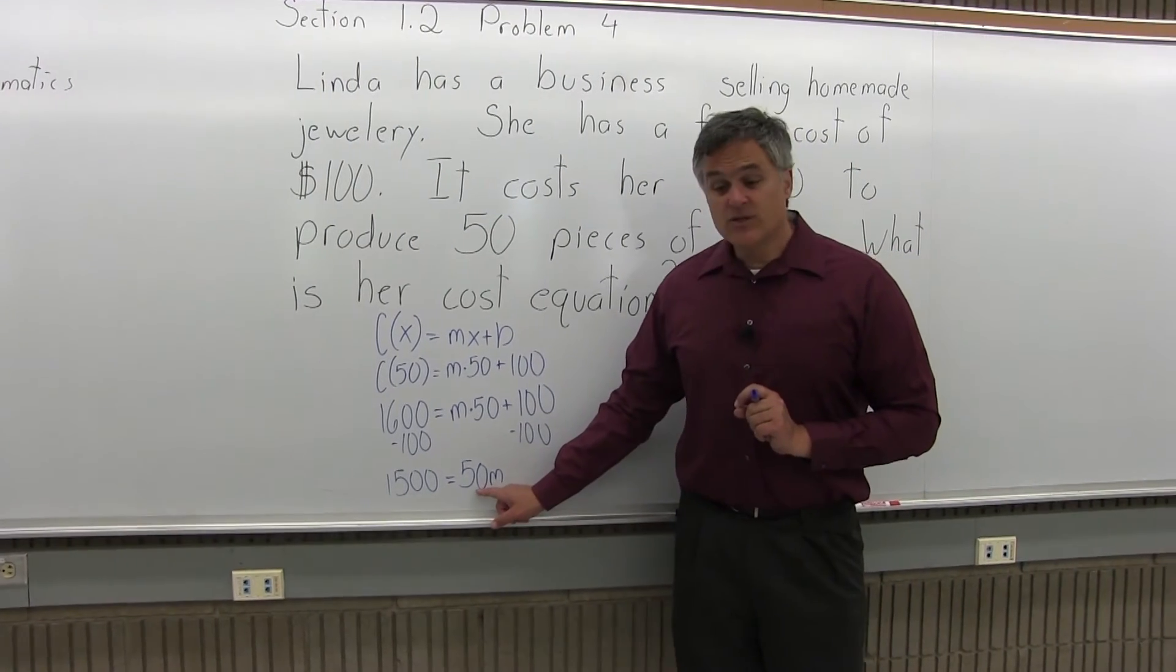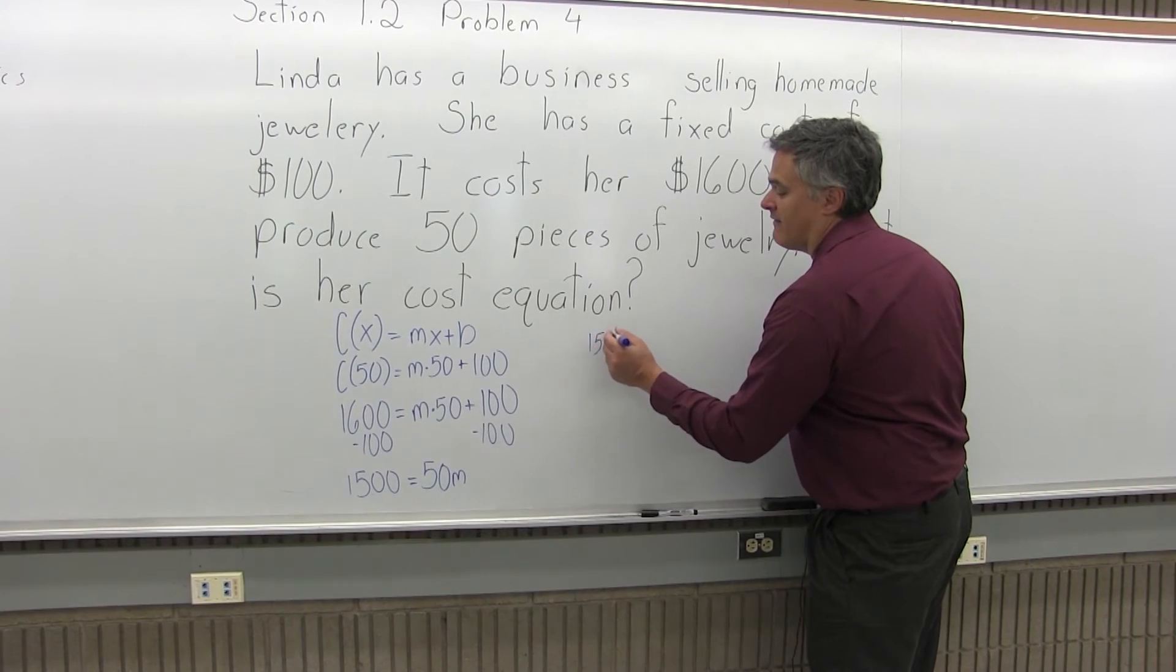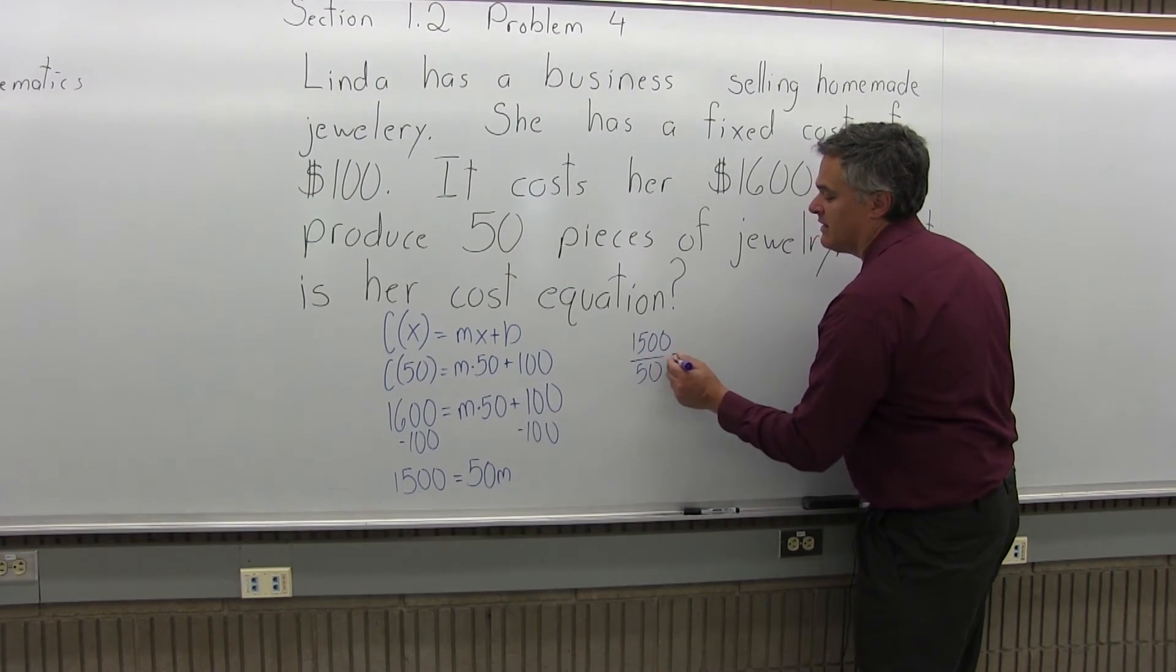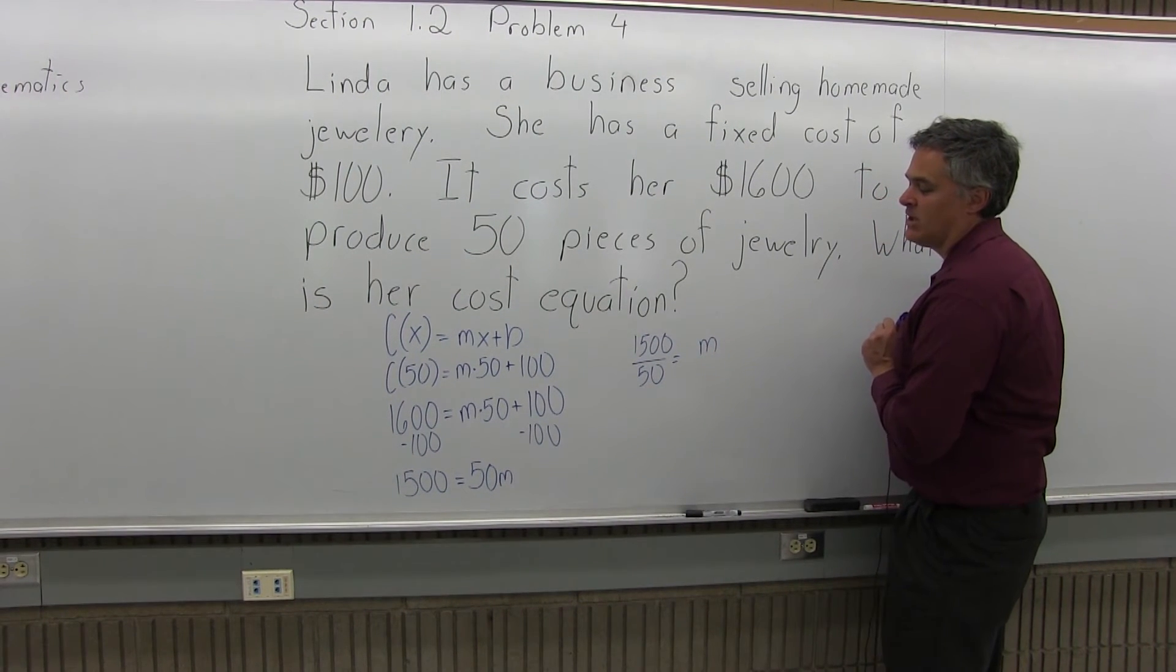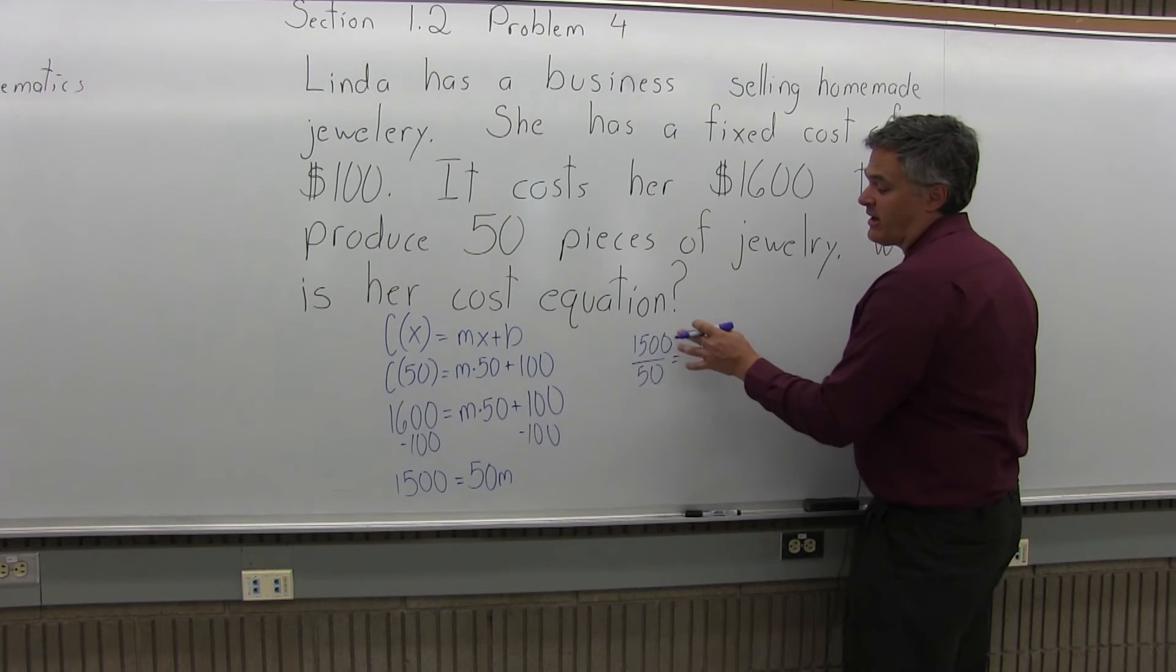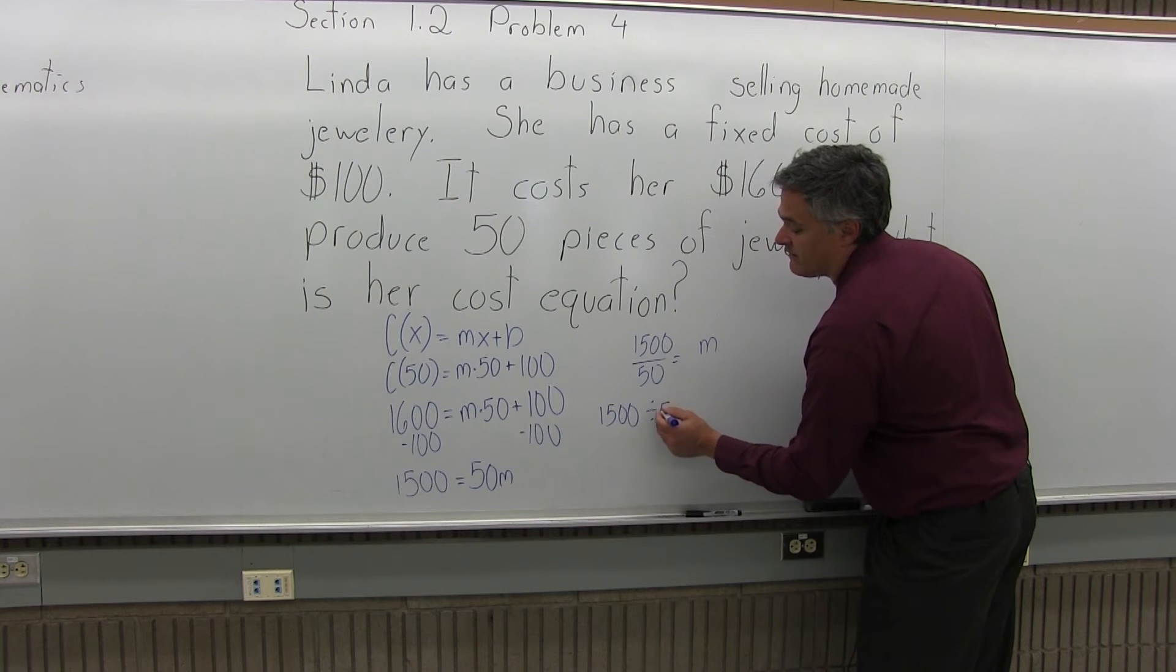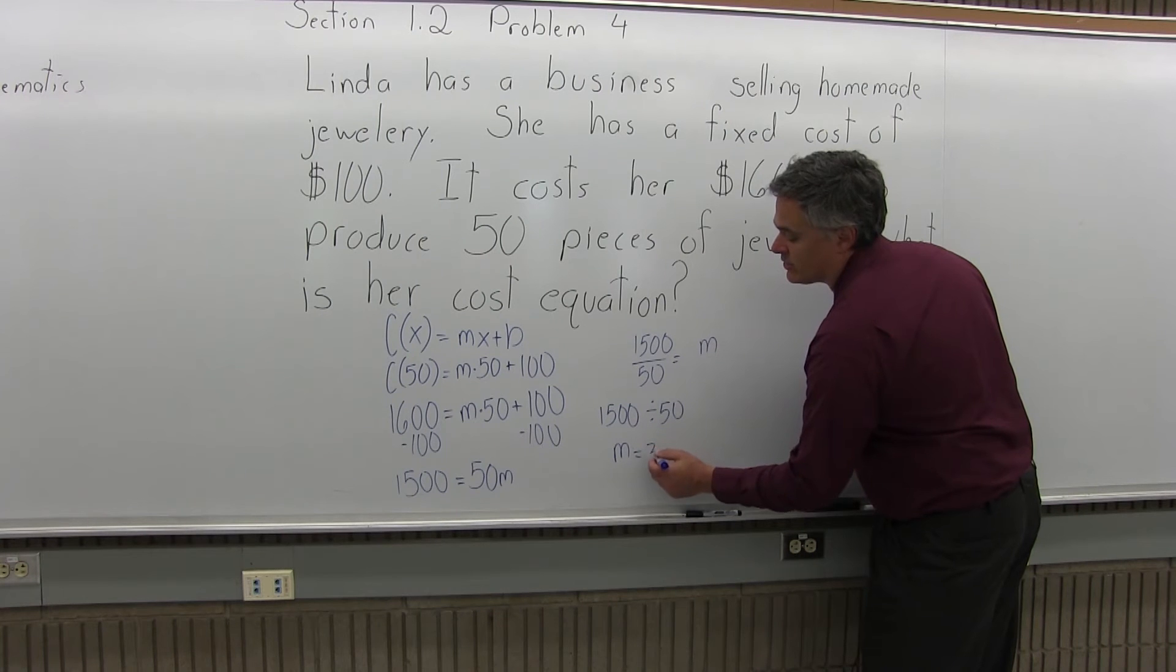Now to get the M by itself, I can just divide out the 50. On the left, I would have 1500 over 50, and that would equal M. If I divide that out, I can see in my head is 30, but if you don't see it easily, use your calculator and do 1500 divide by 50, and you'll have M equals 30.